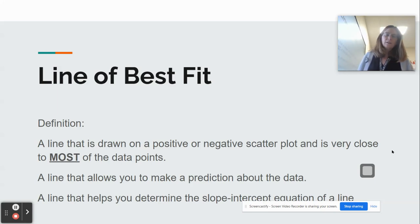The line of best fit is drawn on a scatter plot, either a positive or negative scatter plot. And it's drawn very close to most of the data points. It's not a connect the dot type situation. And it doesn't have to go through every single data point. And the line is used to make predictions about the data from the table. And it also helps you make an equation from a scatter plot.